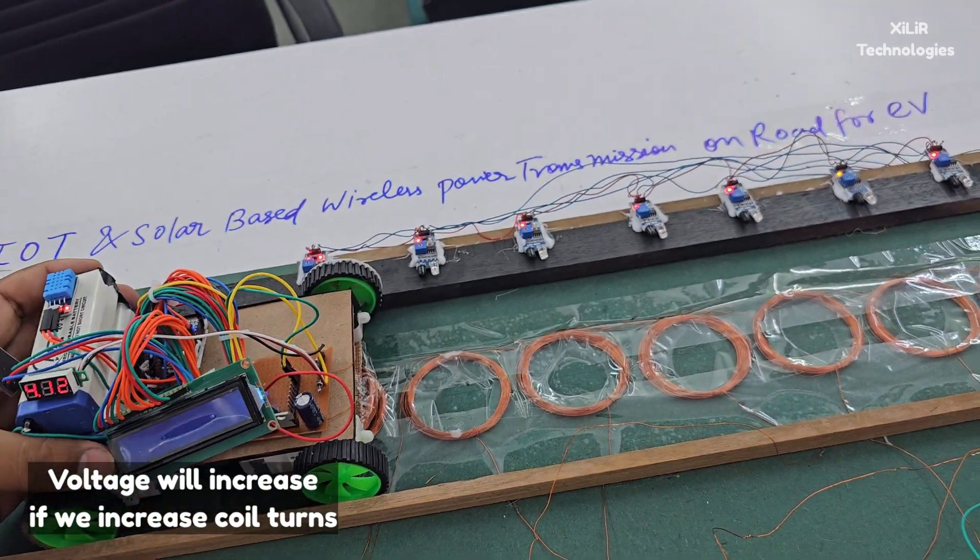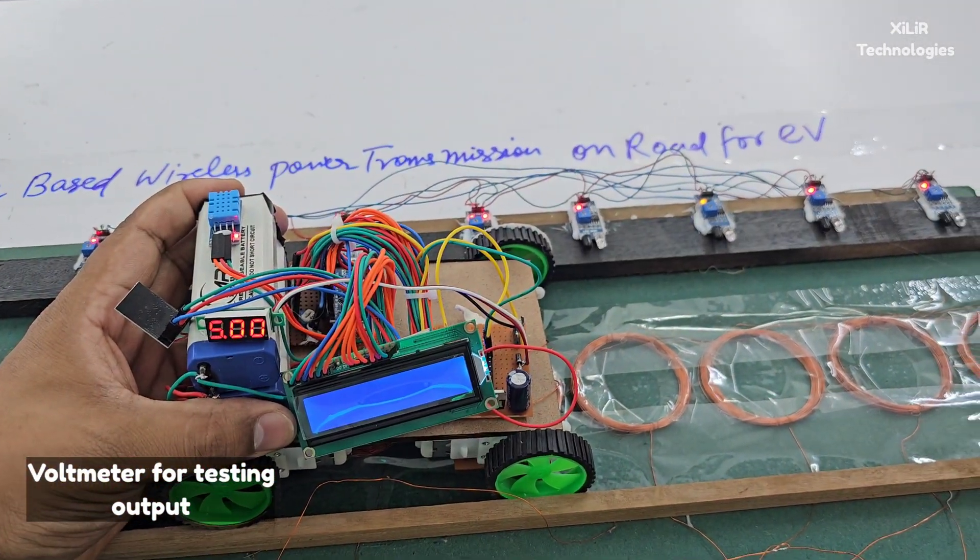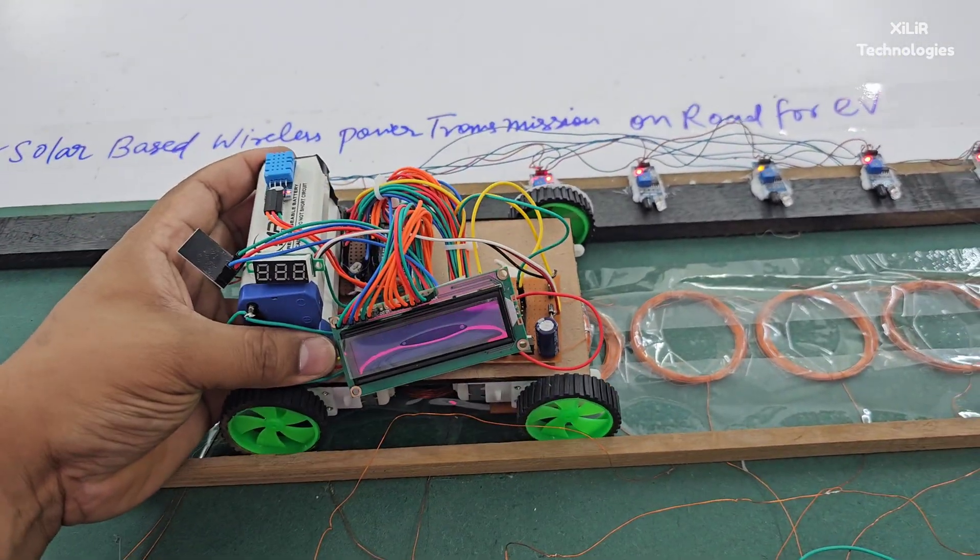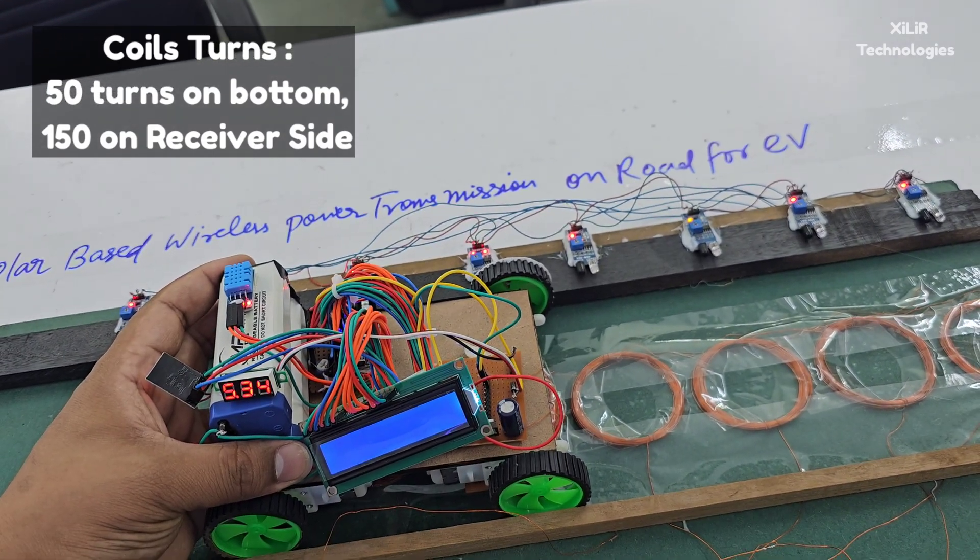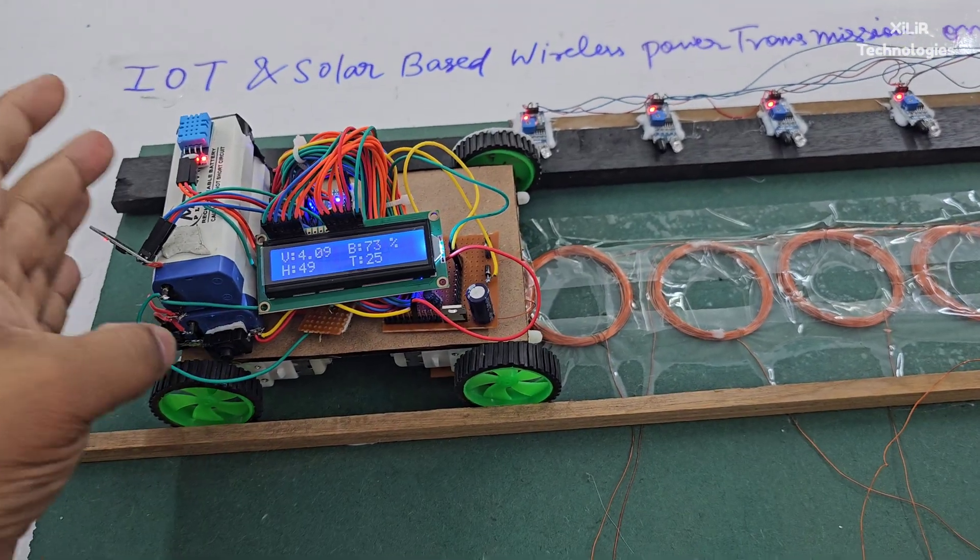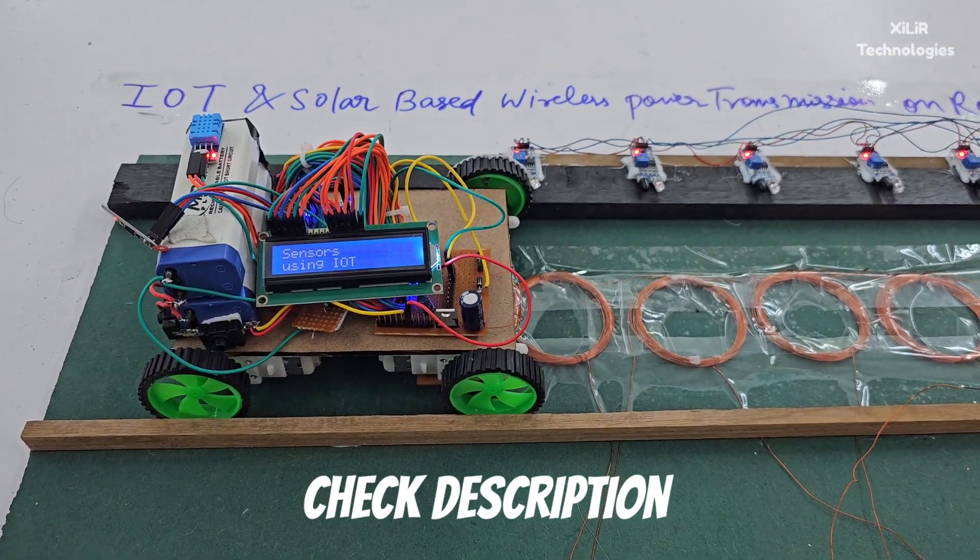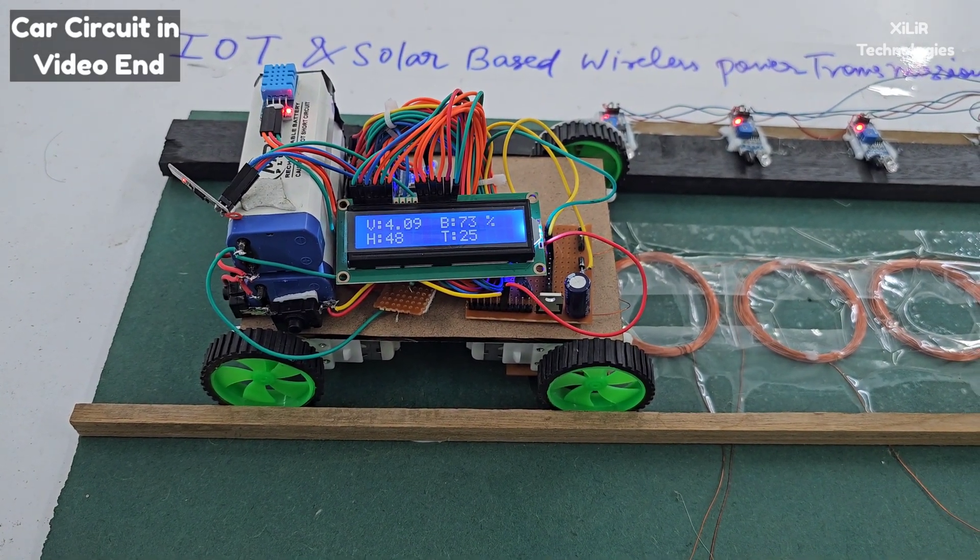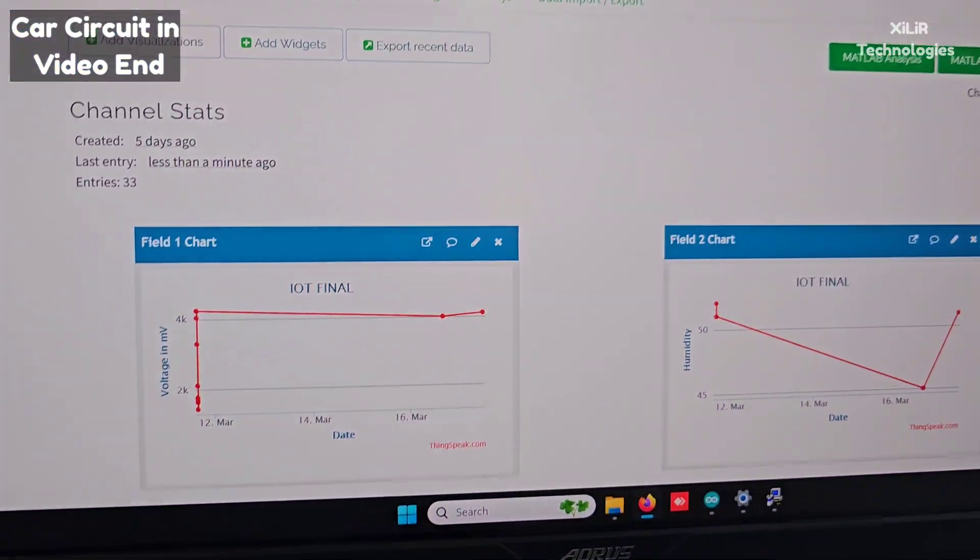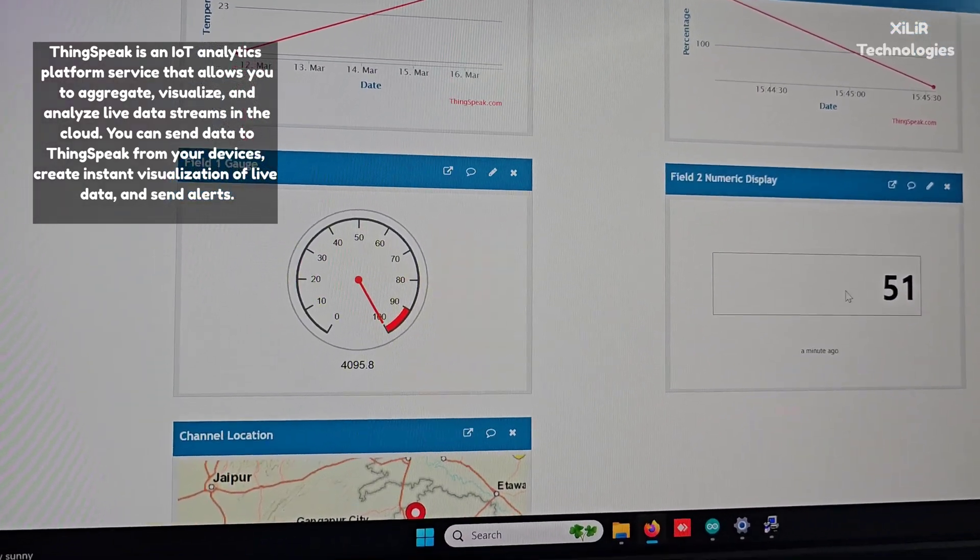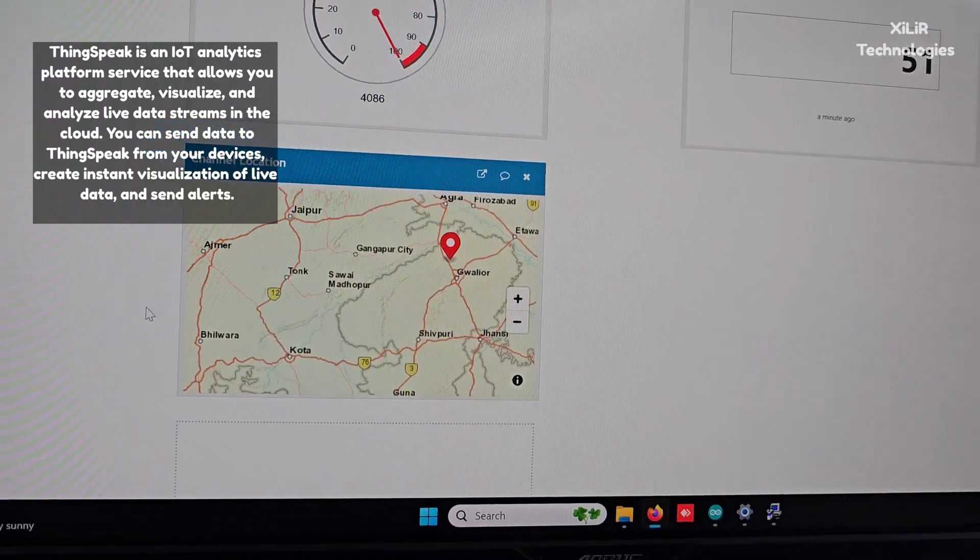Now we have turned on the project. This is running through battery, so it will show voltage, battery percentage, humidity, and temperature. On the internet it will plot graphs of voltage, humidity, temperature, and percentage in gauge, numeric, and location can be entered manually where your project is.